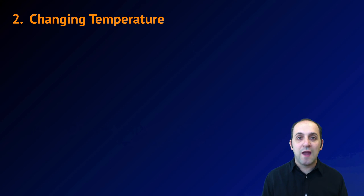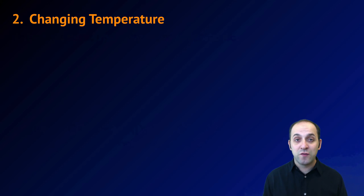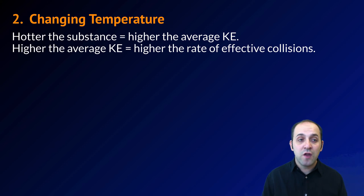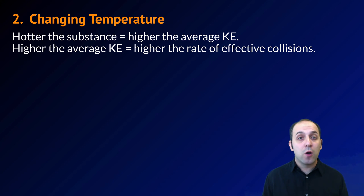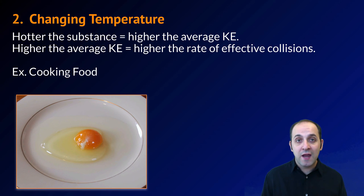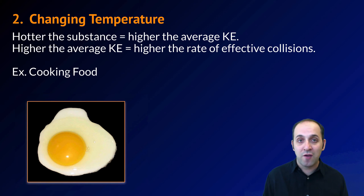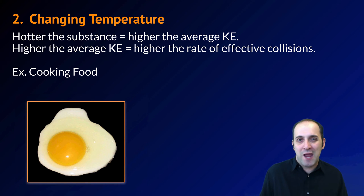The second mechanism that affects reaction rate is changing the temperature. The hotter the substance, the more average kinetic energy we give the molecules. As the kinetic energy in our sample increases, the particles will collide more, and as a result there'll be more collisions and more effective collisions. We can see this when we cook food. Here's a raw egg, and we know that in order to turn the egg into something cooked, we have to add a considerable amount of heat. That causes the reactions that take place over the cooking process to occur at a much faster rate than would happen if we just left the egg out at ambient temperature — it would happen at a negligible rate.